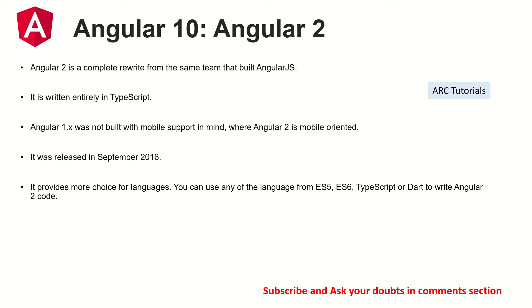Angular 2 is a complete rewrite of AngularJS. They reimagined the entire architecture using components and a modular structure. Angular 2 is written entirely in TypeScript rather than JavaScript. Angular 1 was not built for mobile, whereas Angular 2 is a mobile-first framework. It was initially released in September 2016. It also provides more language choices — you can write Angular 2 code with ES6, ES5, TypeScript, or Dart.